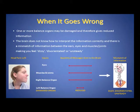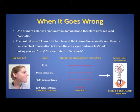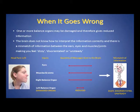For example, if you have a left damaged balance organ and you turned your head to the left, the eyes, muscles and joints and right balance organ would all send out the same amount of messages, but the left balance organ would send out a reduced amount of messages, so there would be a mismatch of information which would leave you feeling dizzy, disorientated or unsteady.